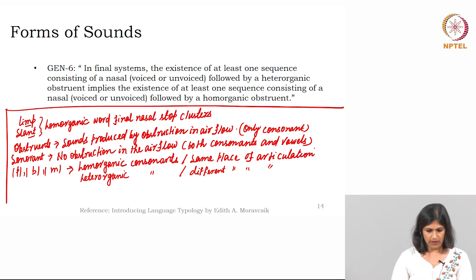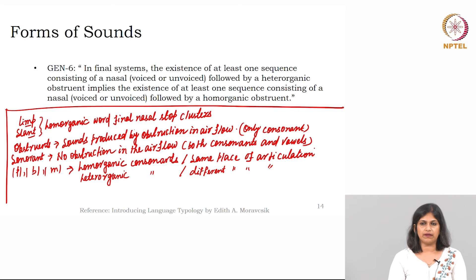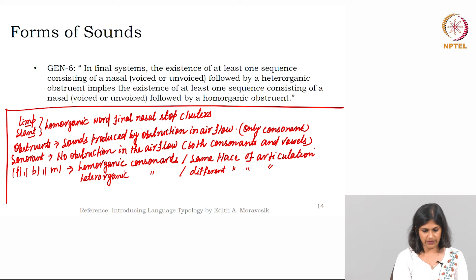If there is an obstruction, the sound is an obstruent; no obstruction, the sound is a sonorant. The sixth generalization discusses two concepts: homoorganic and heteroorganic. Homoorganic consonants are those occurring at the same place of articulation — for example, p, b, and m are homoorganic consonants. But p and ch would be heteroorganic consonants, when the place of articulation is different.